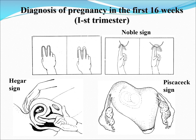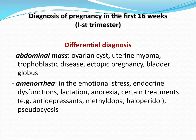Your Hegar sign would be the softening of the isthmus, palpated through the cervix and your abdomen. Other less-used signs would be the Noble sign and your Piscacek sign. Differentials would be an abdominal mass, which could either be a cyst, a uterine myoma, trophoblastic disease, ectopic pregnancy, or a bladder globus. For amenorrhea, it could be emotional stress, endocrine dysfunctions, lactation, anorexia, or certain treatments such as antidepressants, methyldopa, haloperidol, and phenothiazines.